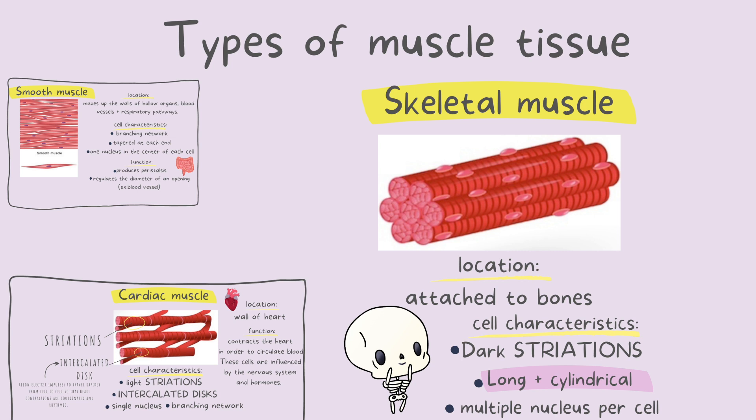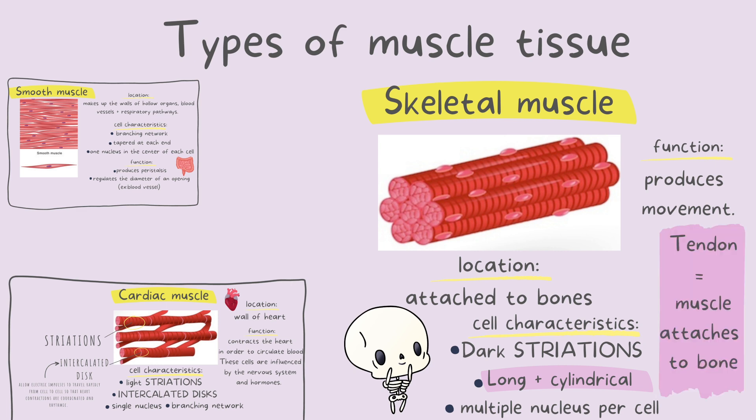The most distinct feature of skeletal muscle cells is that they're long and cylindrical in shape — no other muscle cell is going to be in this shape. Skeletal cells help produce movement because they're attached to the bone; when they're contracting, they're able to move our skeleton. Remember, muscle attaches to bone via a tendon — the tendon is the connective tissue that attaches bone to muscle.